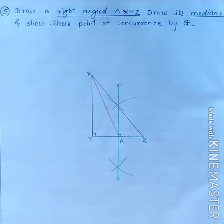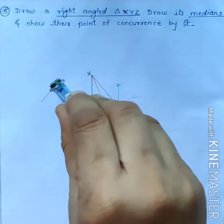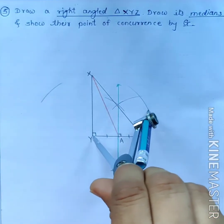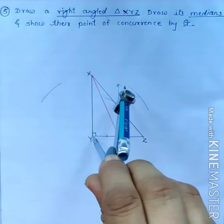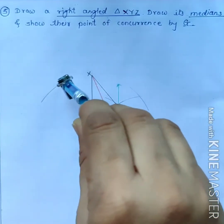Now, median on the side XY. First find the midpoint of side XY. This is first arc. This is another arc with the same radius from the same center to both sides of this segment.